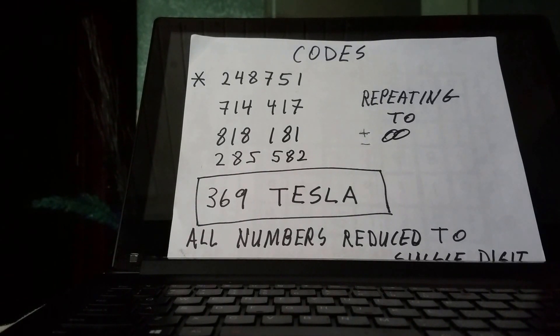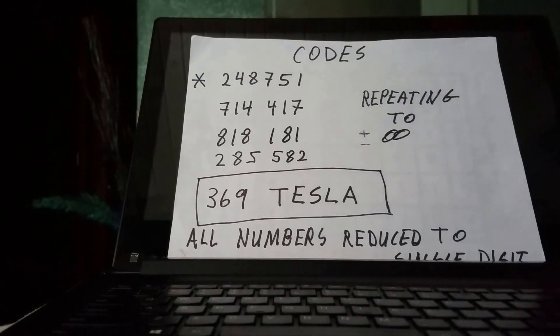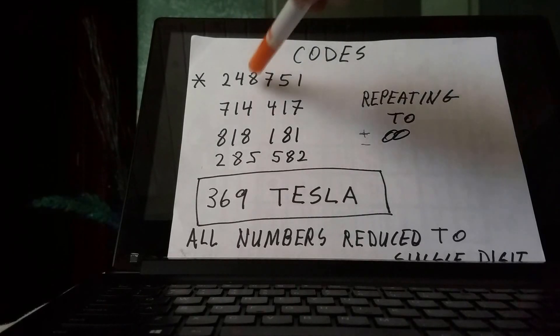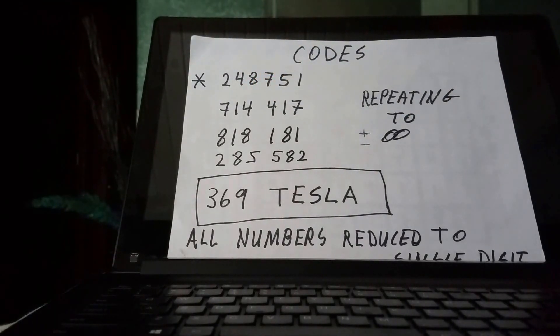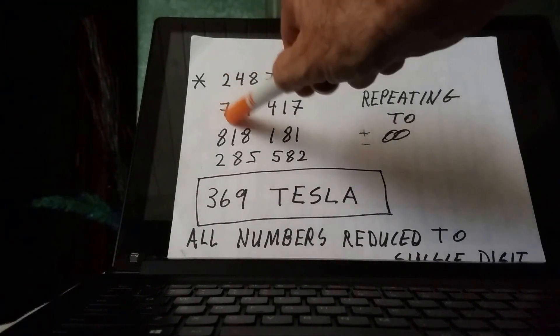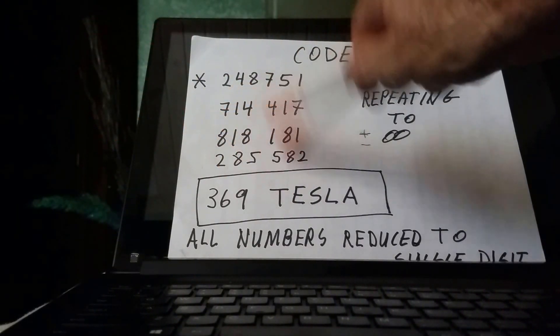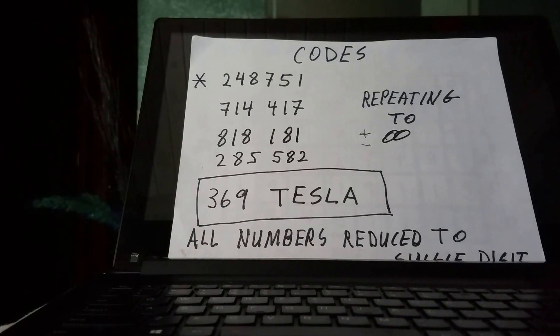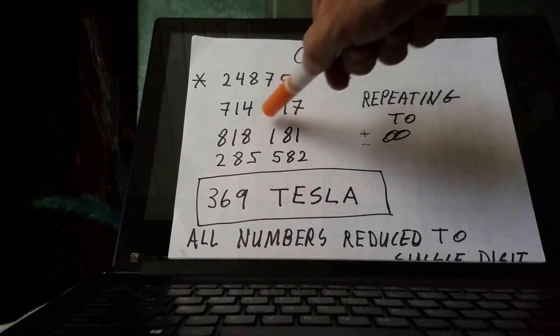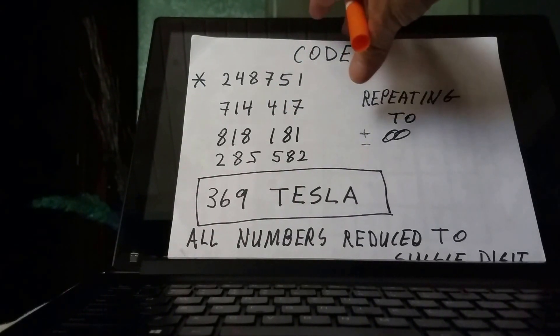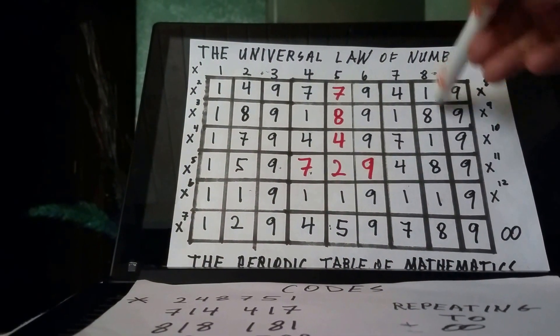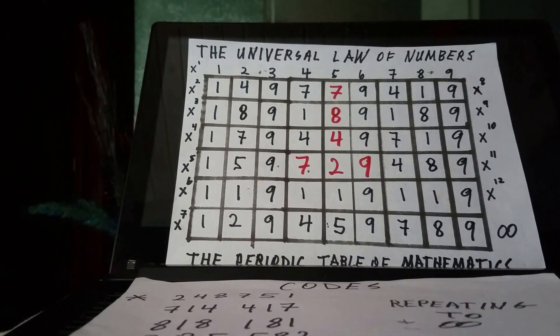The 369 code is really 1, 2, 3, 4, 5, 6, 7, 8, 9. And 248751 are the only numbers that are not 3, 6, or 9. Inside of the 248751 code, which once again is the 369 code, we have the 714 and 417. We have the 818 and the 181. We have the 285 and the 582. It can be 8522. You know, it can be 714, 471, or 417. It doesn't make any difference. They all play a role.